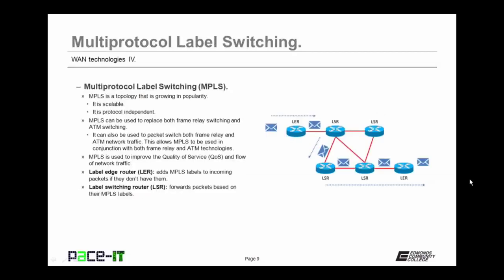Let's conclude with Multi-Protocol Label Switching — MPLS. MPLS is a topology that's growing in popularity because it's scalable and protocol independent. MPLS can be used to replace both frame relay switching and ATM switching — it can packet switch both frame relay and ATM network traffic, allowing MPLS to be used with both technologies. MPLS is often used to improve quality of service and flow of network traffic. It uses a label edge router to add MPLS labels to incoming packets, then passes those packets to a label switching router — LSR — which forwards them based on their MPLS labels to their final destination.